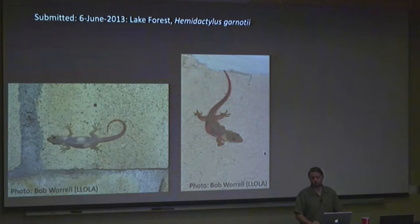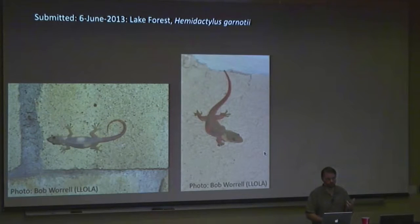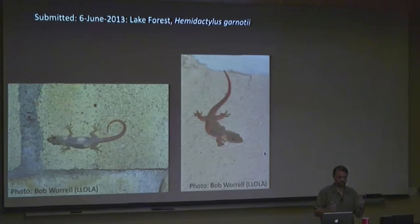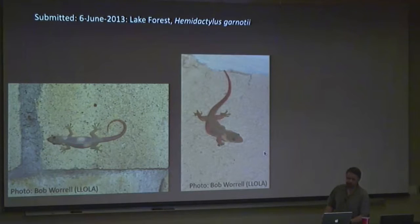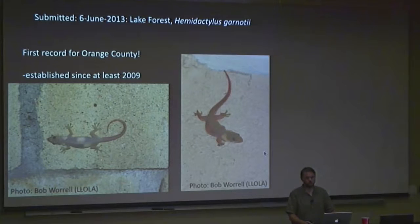A few months later it happened again. On June 6th, a guy named Bob Worrell living in Lake Forest, Orange County, sent me another photo — again an Indo-Pacific gecko. From these photos I was able to identify it directly. These are really interesting species: they're entirely asexual — every individual is female — and throughout breeding season they're continuously developing and laying eggs, two at a time. This was the first record for Orange County; they've been established there since at least 2009.